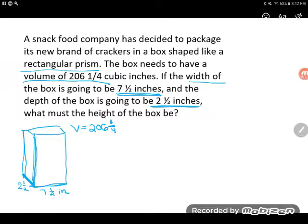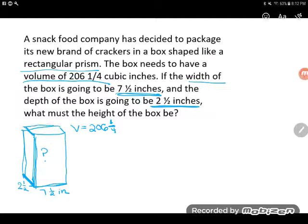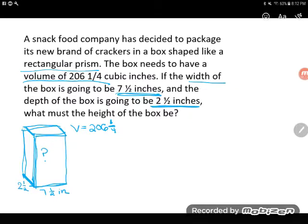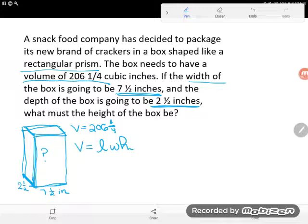They ask us what must the height of the box be. If you're thinking right now about going for your GED formula sheet, that's a really good instinct, because on the formula sheet we have a volume of a rectangular prism formula. That is V equals length times width times height.